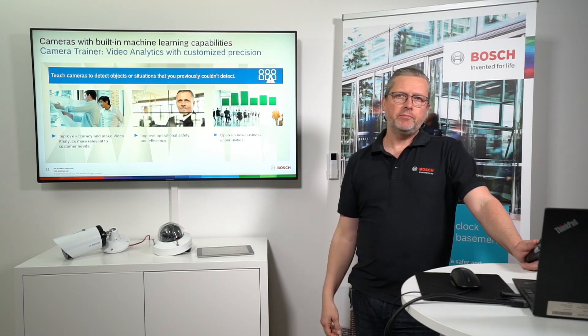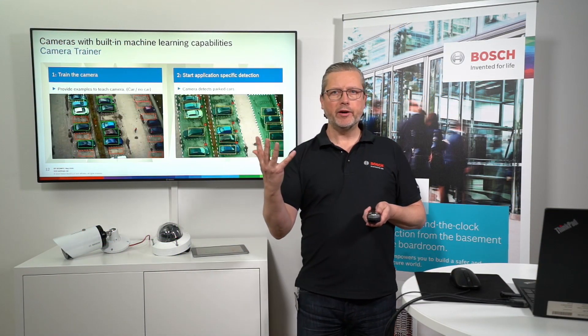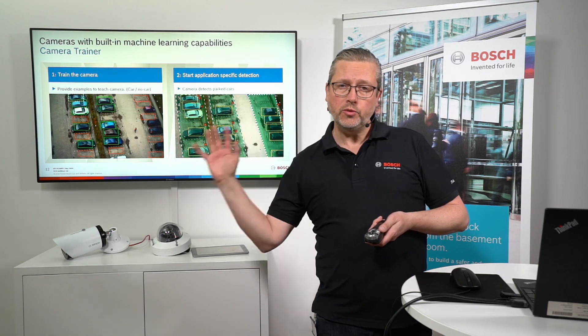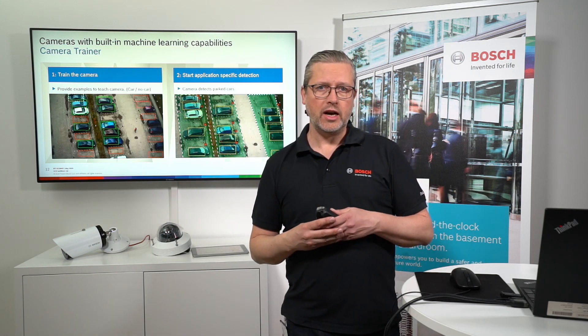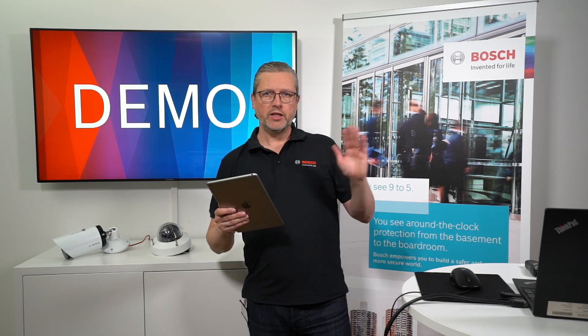What we can do with this machine learning is generate possibilities to create new business opportunities. In this example, we have trained the camera to recognize a parked car in a parking area. First we train the camera, then we take the created and trained detector and put it into one of the tasks in the normal IVA settings. It's really about training the camera to understand new sets of different detectors and use those detectors the same way as all other tool sets for making an alarm in a Bosch camera.